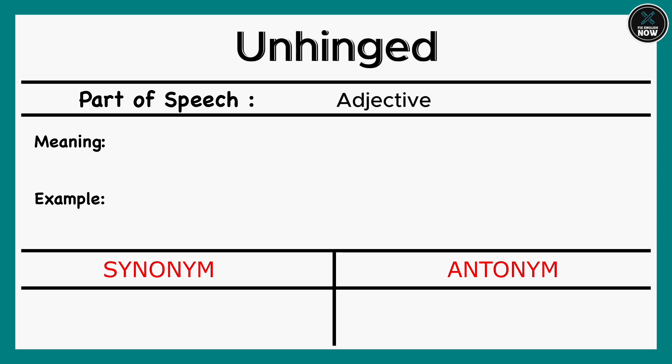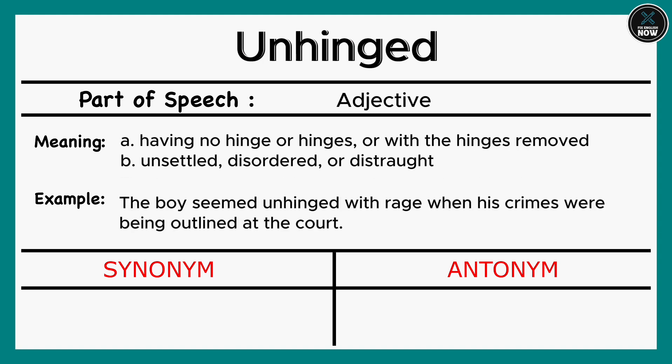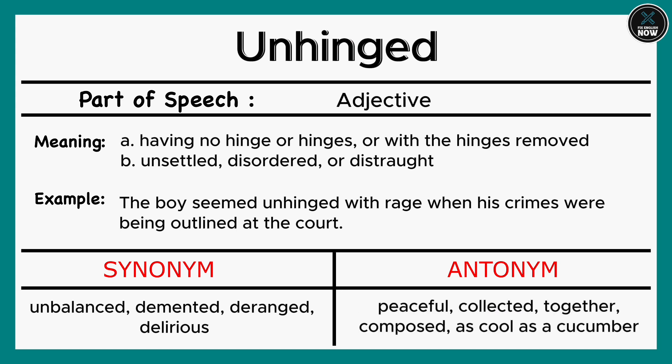Unhinged: A. Having no hinge or hinges, or with the hinges removed. B. Unsettled, disordered, or distraught. Example: The boy seemed unhinged with rage when his crimes were being outlined at the court. Synonyms: Unbalanced, Demented, Deranged, Delirious. Antonyms: Peaceful, Collected, Composed, as cool as a cucumber.